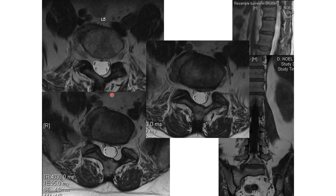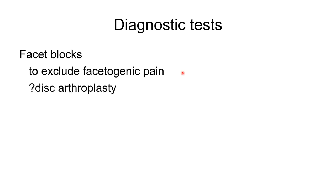Here's an example of a large extra-foraminal disc herniation. Remember the nerve roots come out through the foramen and are typically compressed out the front — if there's a disc here it can cause extra-foraminal compression. For back pain where we think the facets might be causing the pain, we can inject them with steroids and local anesthetic for temporary relief. But remember, not every back pain is spinal pain.